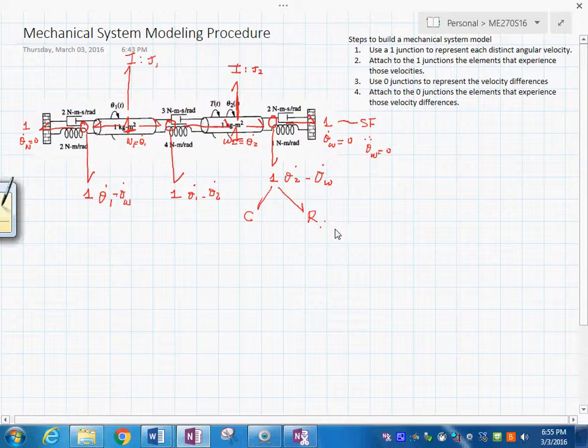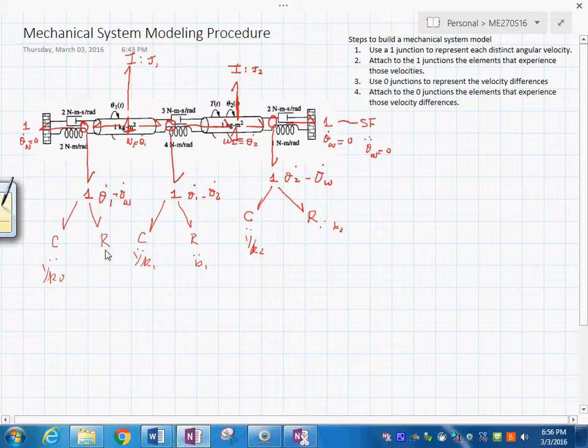Those are the velocity differences. Our last step, our fourth step is going to be to attach to the zero junctions the elements that experience those velocity differences. So, you see in here, we are going to see this, you have the C element in here, and you have this R element over here. This R with value, whatever it is, b sub 2, this with value 1 over k sub 2.